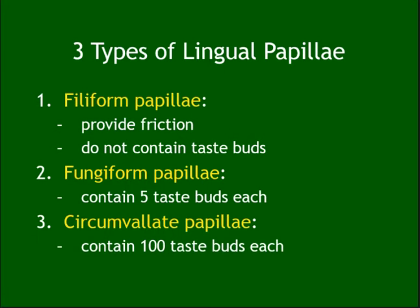Filiform papillae do not have any taste buds — none at all. Fungiform have just a little, about five. The vast majority are in the circumvallate papillae, which contain a hundred or close to that taste buds. In the taste buds themselves there are stem cells and gustatory cells, and their lifespan is about ten days.